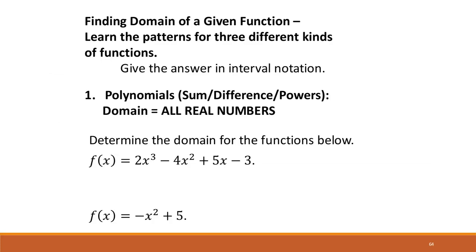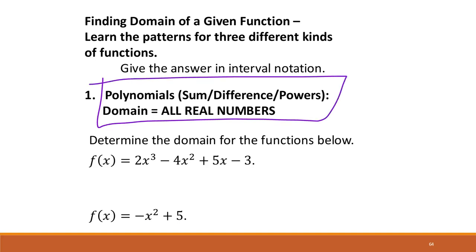So this is the definition about finding domain and the difference between polynomials and other types of domains we're going to look at throughout the lecture. What you really need to take from this is that if it's a polynomial, the domain is always all real numbers. You can state it as all real numbers, or write it as negative infinity to positive infinity in interval notation. We know this is a polynomial because it has a variable to a power.